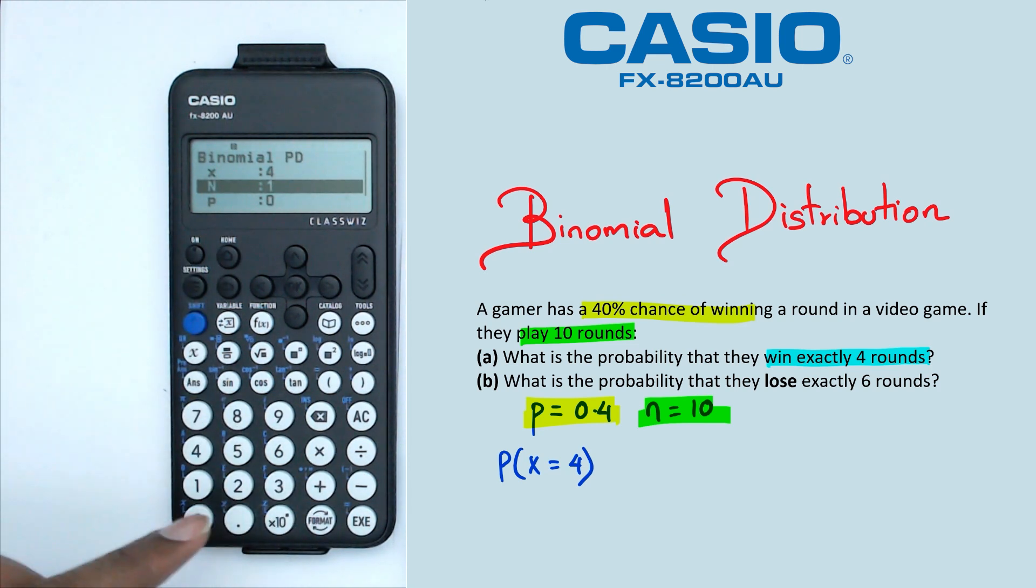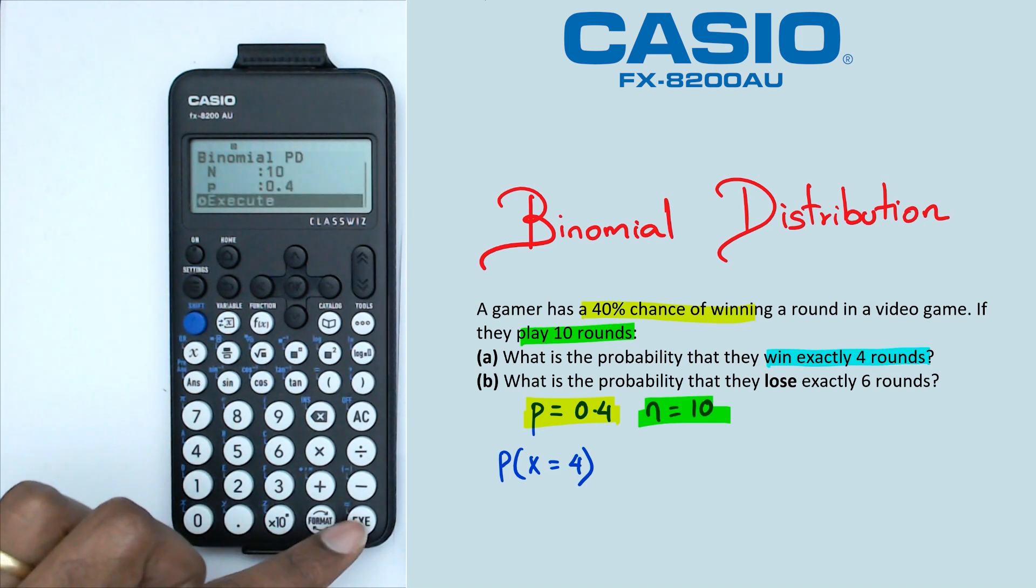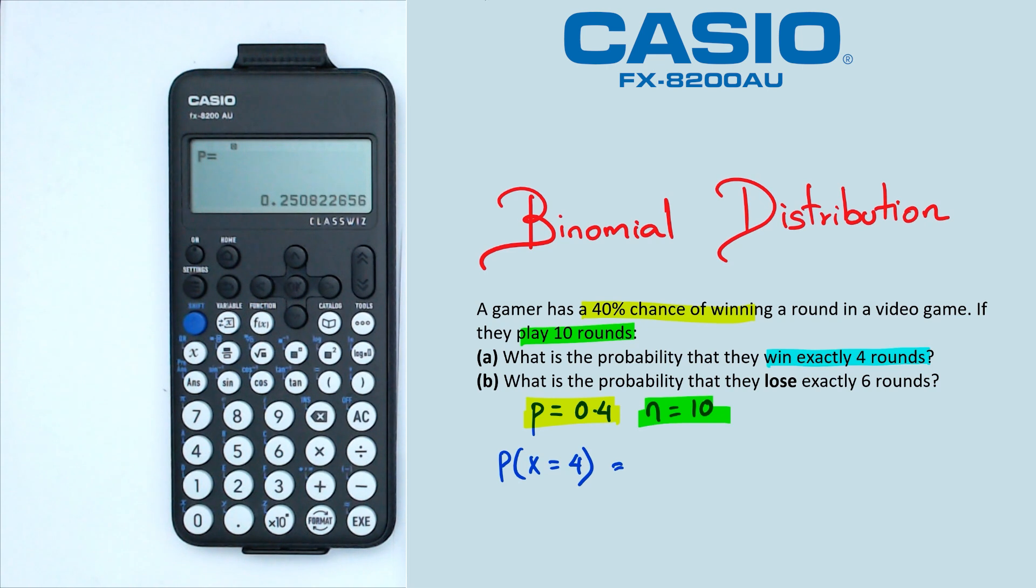The number of trials is 10. And we've got the probability of success is 0.4. And we're going to click on execute. And when we do this, we actually get a probability of 0.2508.